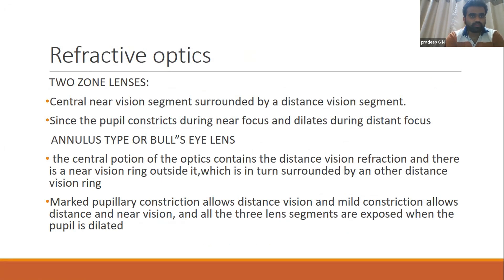Refractive IOLs include two-zone lenses. There is a central near vision segment surrounded by a distance vision segment. The pupil constricts during near focus and dilates during distance focus. Another type is the annulus type.